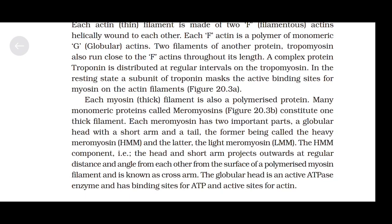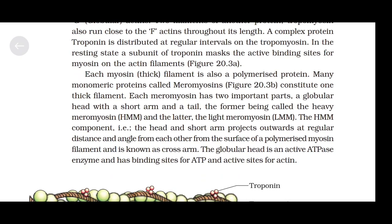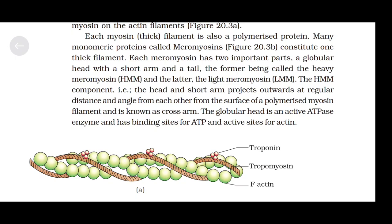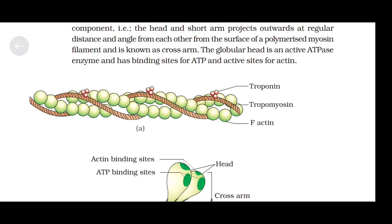Each myosin thick filament is also a polymerized protein. Many monomeric proteins called meromyosins constitute one thick filament. Each meromyosin has two important parts: a globular head with a short arm and a tail. The former is called heavy meromyosin (HMM) and the latter light meromyosin (LMM). The HMM component — the head and short arm — projects outwards at regular distances and angles from the surface of a polymerized myosin filament and is known as the cross arm. The globular head is an active ATPase enzyme and has binding sites for ATP and active sites for actin.